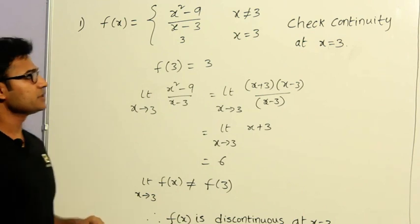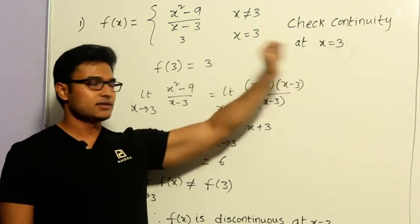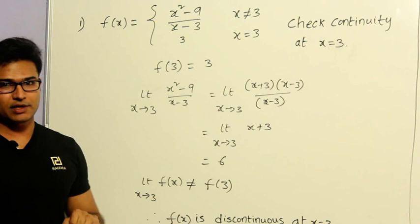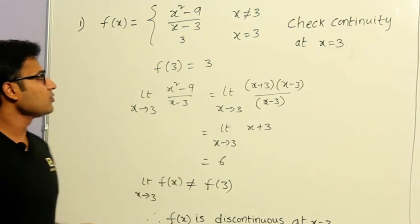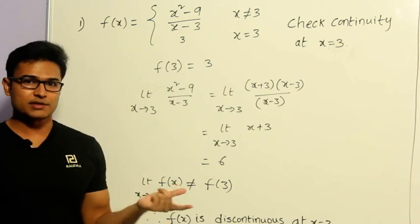Now, we are supposed to check the continuity at x equals 3, which means we should say whether this function is continuous or not at that point. Now, how to find it out?